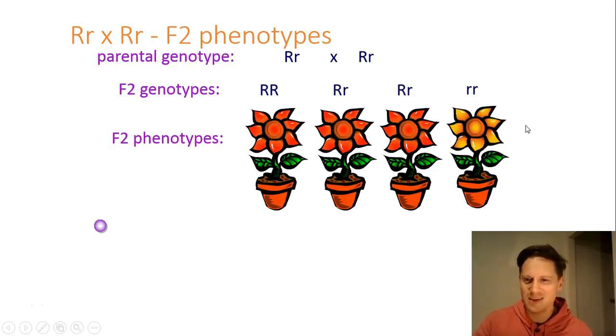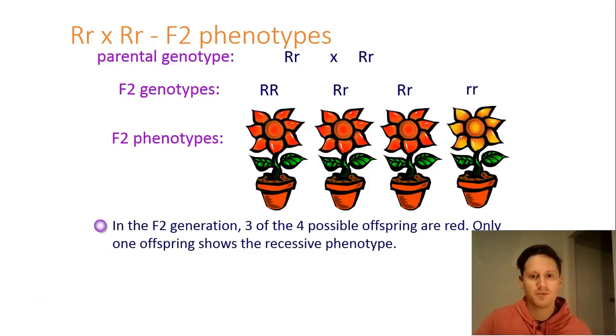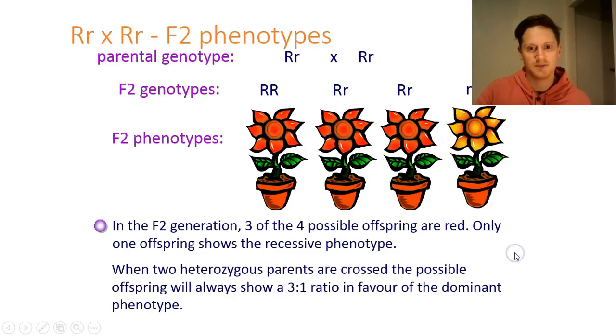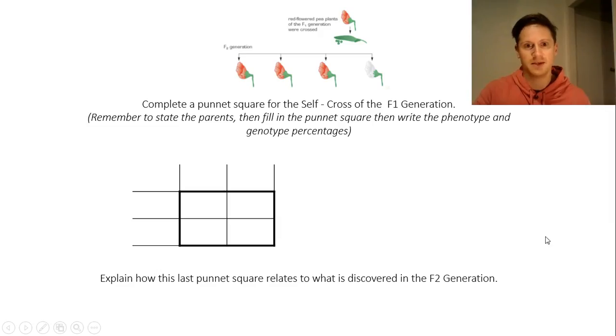We would have our white flower. So three of the four possible offspring are red. Only one shows the recessive phenotype. So you've got a three to one ratio dominant to recessive, or you can say 75% dominant, 25% recessive.